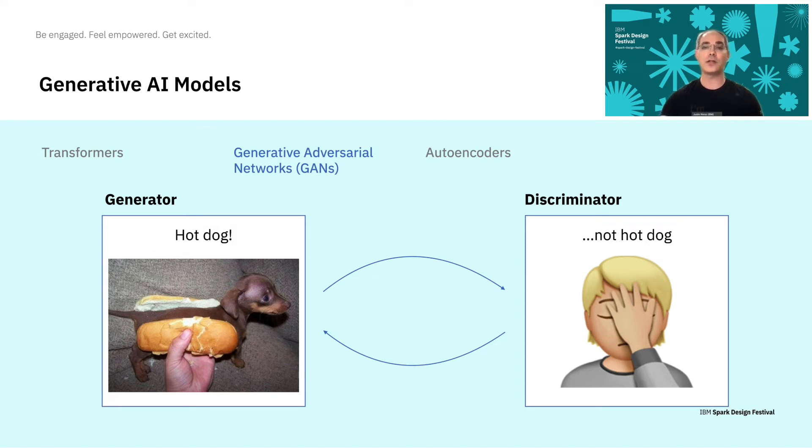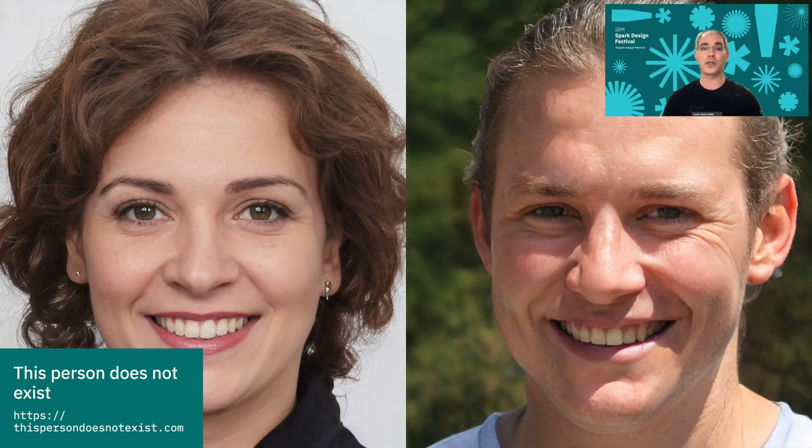Here's an example of what I'm talking about. These images were created with a model called StyleGAN — they're actually really detailed images of people's faces, but these aren't actually real people. As with the poem example, if I didn't tell you that, you probably would have thought that these were just photographs.